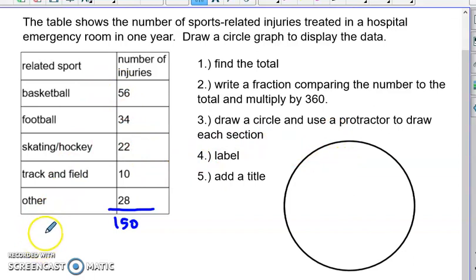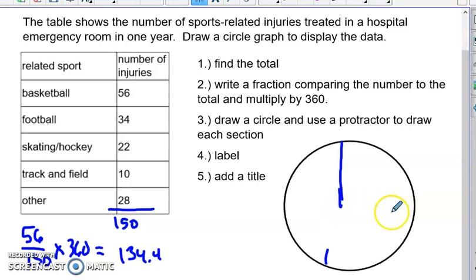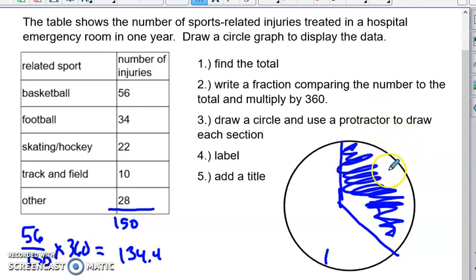So our first one is basketball. So we had 56 injuries in basketball out of a total 150. And then we're going to multiply that by 360 again to tell us how big our section is, how many degrees to make that section. That one turned out to be 134.4. Okay, in a circle, a 90 degree angle is an L like this. That's 90. So I know it's going to be a little bit more than an L than a 90 degree. So I'm just going to eyeball it here. 90 is this way. 180 is half of a circle. So it's going to be somewhere between a quarter of a circle and a half of a circle. We could certainly use a protractor. If we were doing this on paper, we would use a protractor, but I'm just going to guess. And we're going to call that one basketball. I should have left some room there for basketball.